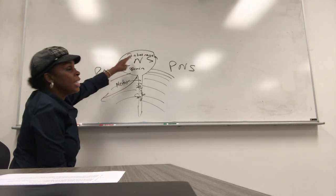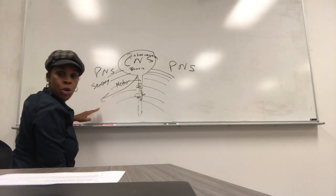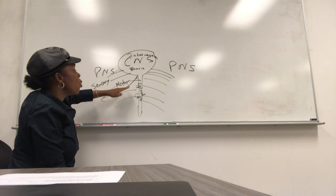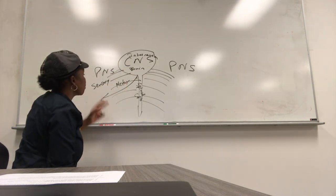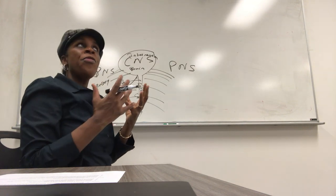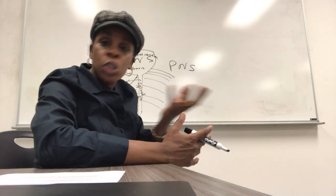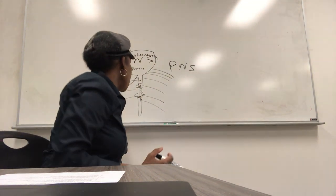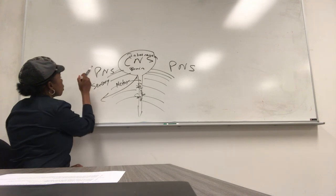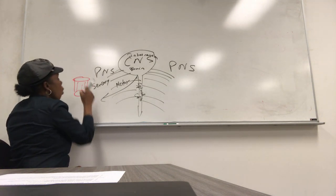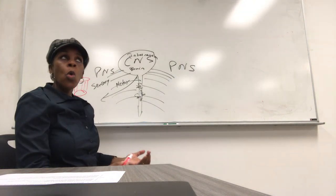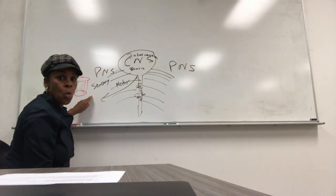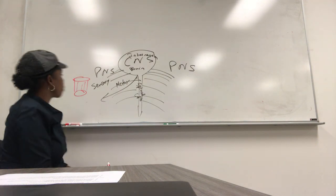Sensory neurons receive, interneurons analyze, and then the motor neuron carries the command to get things done. Based on where the sensory neuron is located, we have different types. If the sensory neuron comes from a muscle, skin, or joints, those types of sensory neurons will be called somatic sensory neurons — somatic means from the soma, from your muscle.